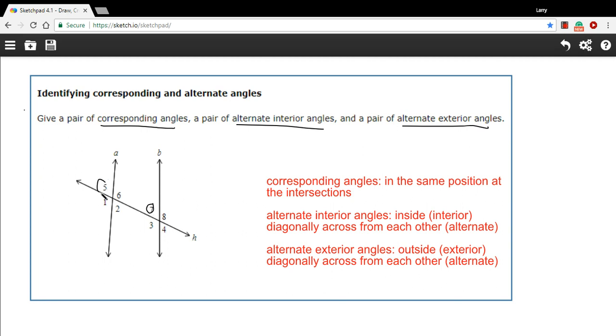So 5 and 7 would be corresponding angles. So would 2 and 4, so would 1 and 3, so would 6 and 8. In the same location in the intersection. So a pair of corresponding angles would be angle 5 and angle 7.